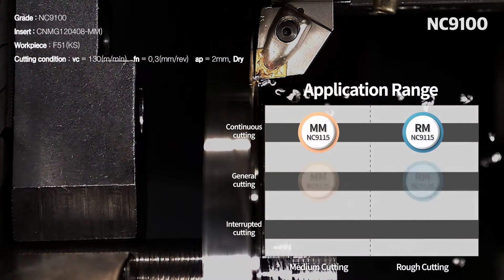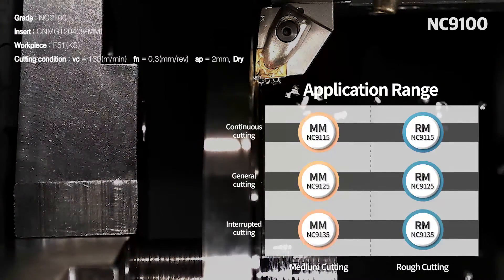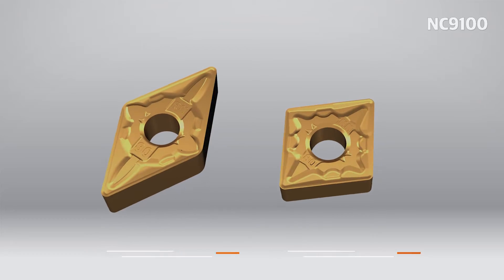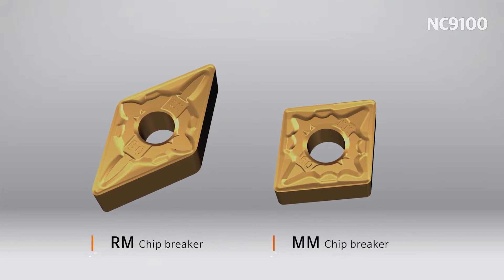The NC9115, NC9125, and NC9135 grades and the MM and RM chip breakers were developed.